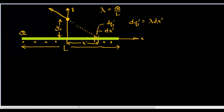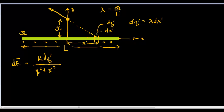The electric field caused by this little point here would be written as dE equals k dq prime over r squared, and r squared is going to be y-naught squared plus x-prime squared.